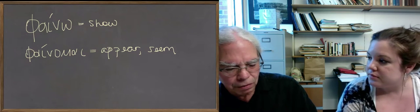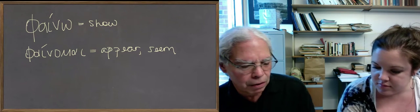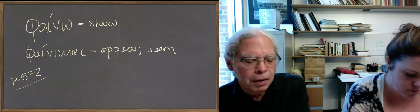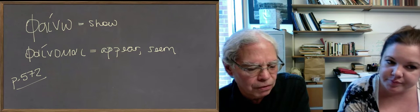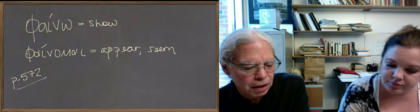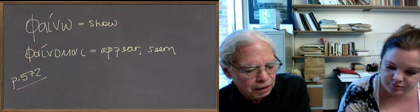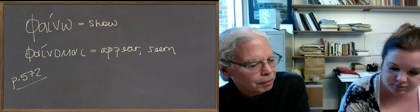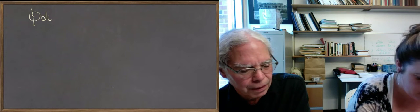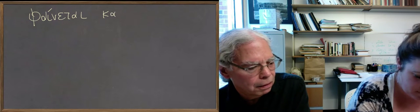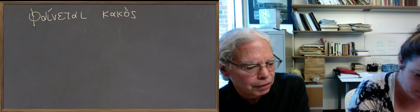So the example it gives is phinatai cacos ani, it's on page 572, and phinatai cacos on. Do you want to write them down? Phinatai cacos ani. We can take a close look at these.